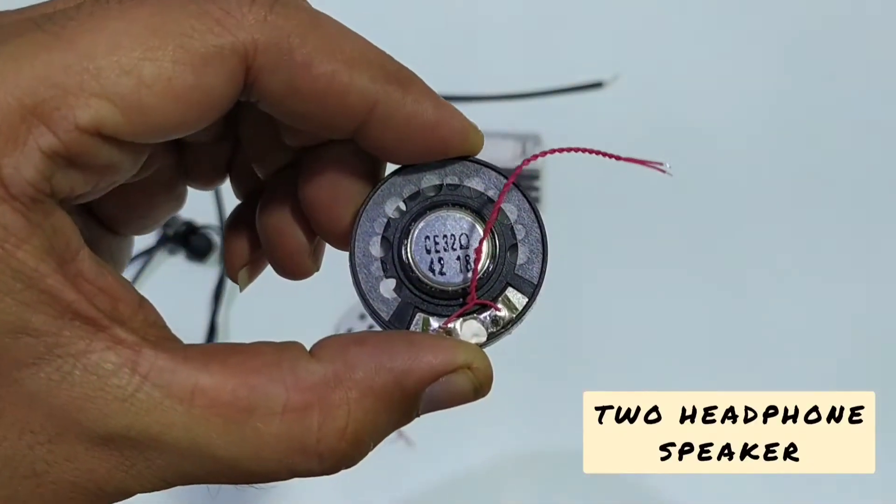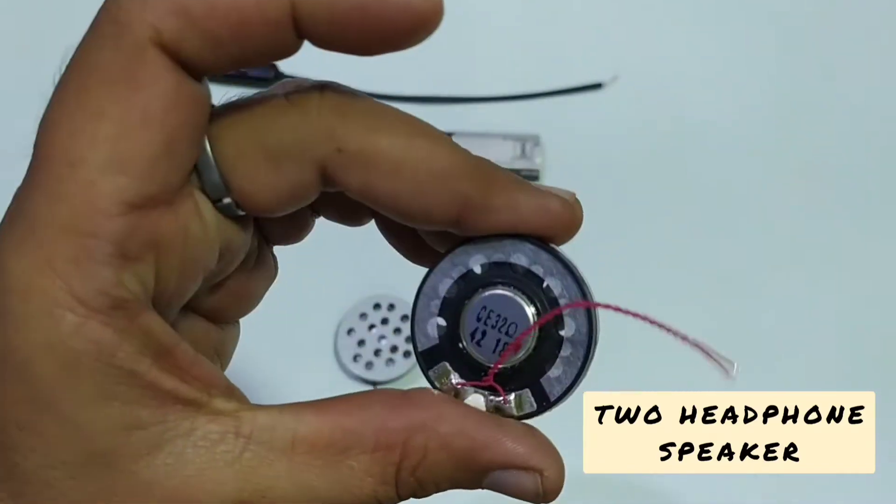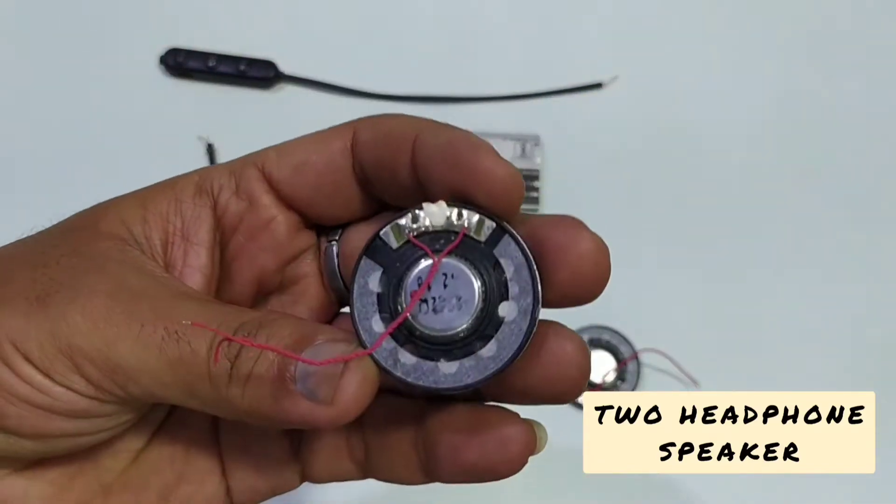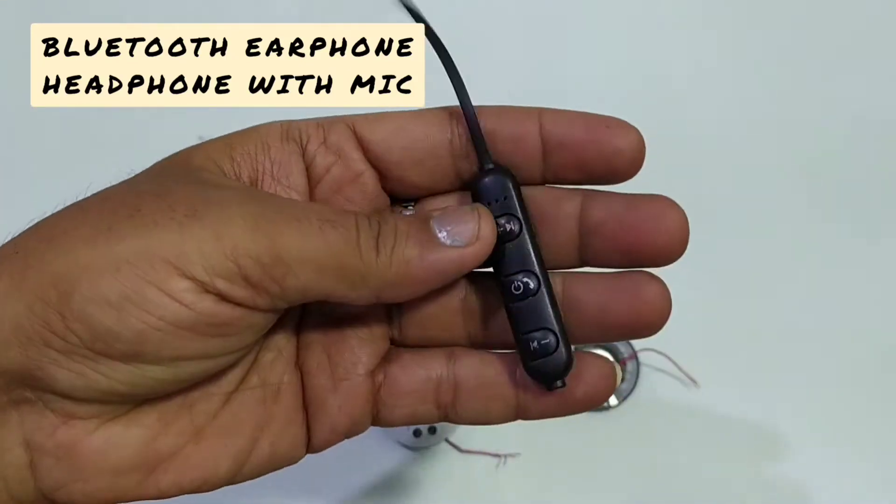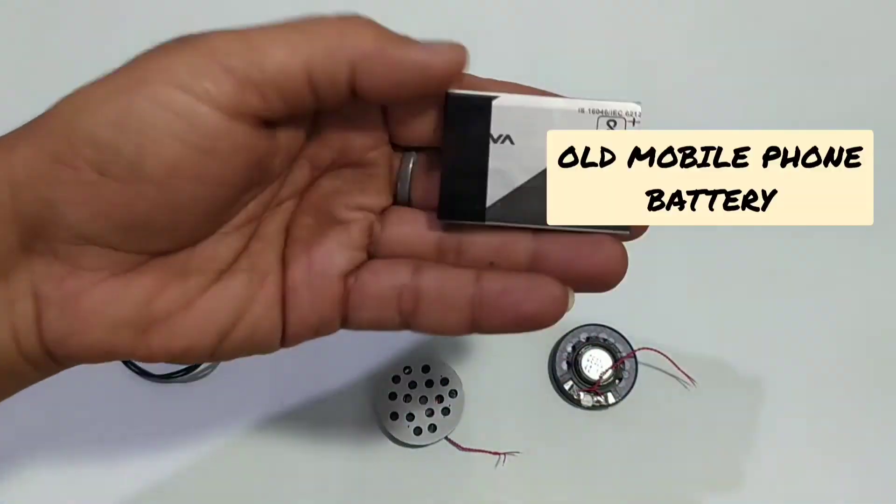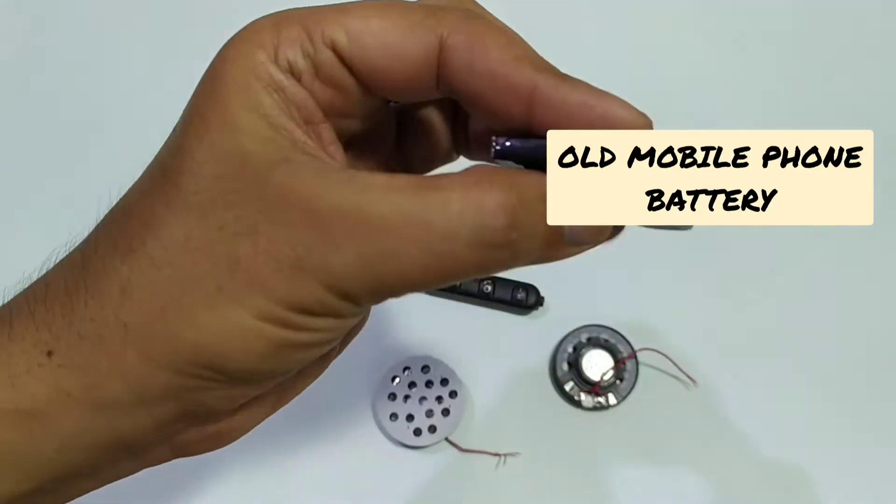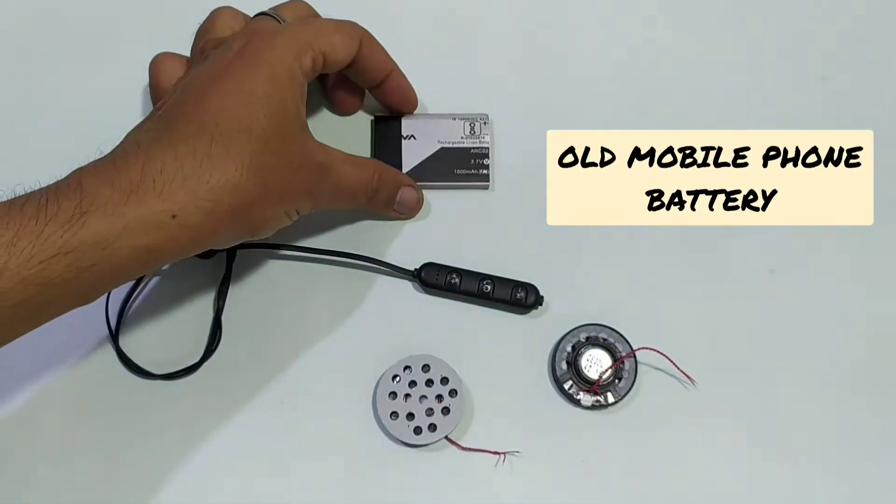So friends, we need to build Bluetooth headphones. We have two speakers, 42mm, which we have ordered from Amazon. I will give you the link in the description. You'll need a headset with a microphone, and you can use a mobile phone battery if you have one.